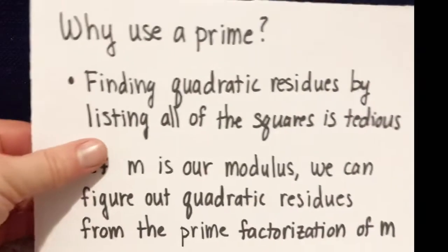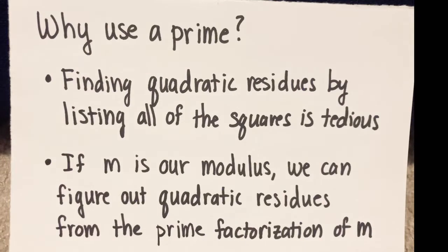The reason that we use a prime is because we saw in the last video that finding the list of all quadratic residues by listing squares is very tedious, and we want to find some shortcuts for that. One thing that is known is that if we have a modulus m, we know some things about the quadratic residues mod m based on the primes that are in the prime factorization of m. So if we are able to establish information about whether or not something is a quadratic residue mod a prime p, and the p divides m, we know something about m.